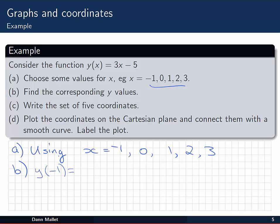I'm just going to use the values I suggested in the question: -1 through to 3, the integers. Then find the corresponding y values. So first, y(-1) just means substitute -1 into our function wherever we see an x. So I'm going to get -3 - 5, or -8. y(0) would be 3×0 - 5, or -5. And so on.